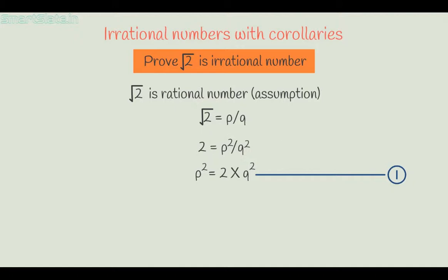Since p squared equals 2 times q squared, p squared is an even number. That means p times p is an even number. This means p itself must be even, because a product can be even only when at least one factor is even, and here both factors are the same. Hence p must be an even number.